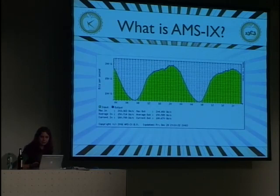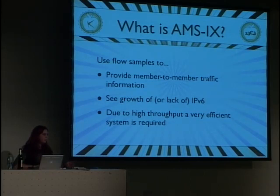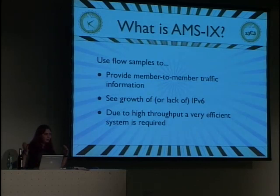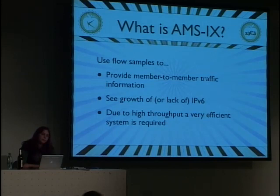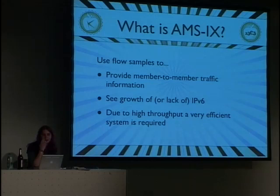The first plan was to provide member-to-member information. If you only look at interface counters, you know how much traffic one person is doing on a port, but you don't know where that traffic is actually going. People are interested in that — especially smaller ISPs who don't have enough resources to do this analysis themselves. They're happy if we can provide information like that. At AMS-IX, we have a rule of one MAC address per port, so we can filter by MAC address to determine whose traffic belongs to which member.